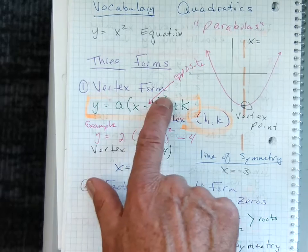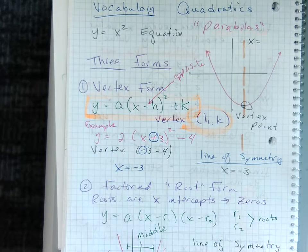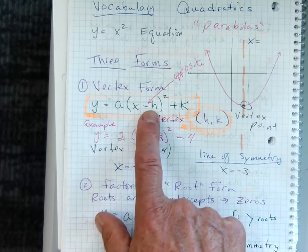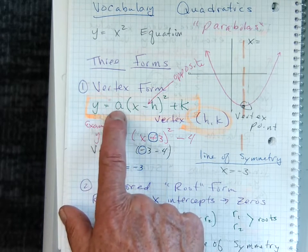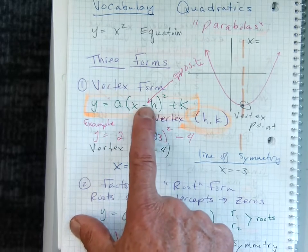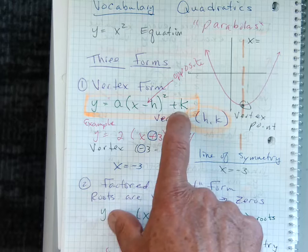First form is called the vertex form. I like the vertex form because it's in a form that we can get the vertex easily. So we would have y equals some a number, some number, parentheses x minus h squared plus k. This is a vertex form.